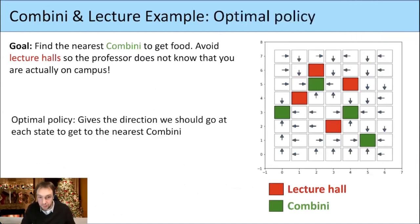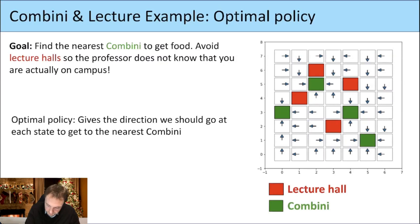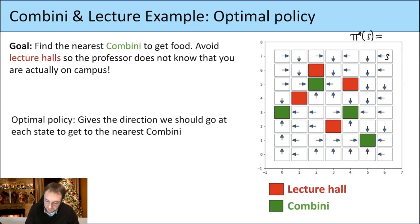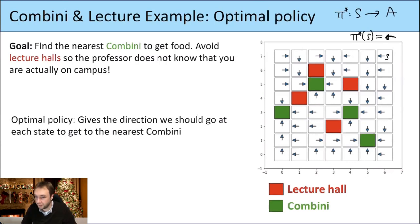Here we had this example of an optimal policy. In each state, the arrows show what the optimal policy is. If this is state S, then the statement is that pi star of S is the action 'going left'. The policy is a function from S to A, where A is the set of these four directions.